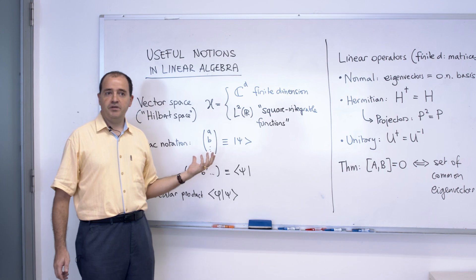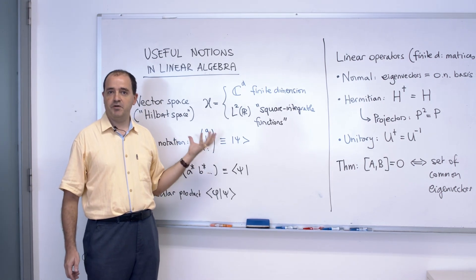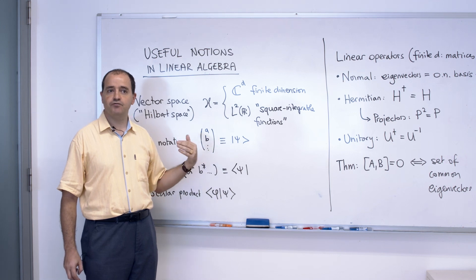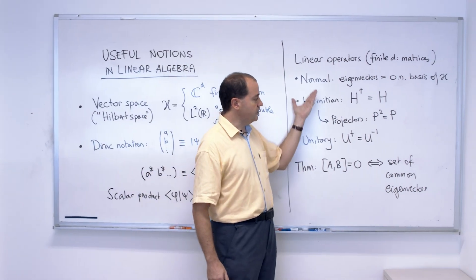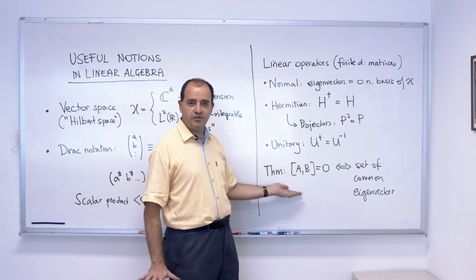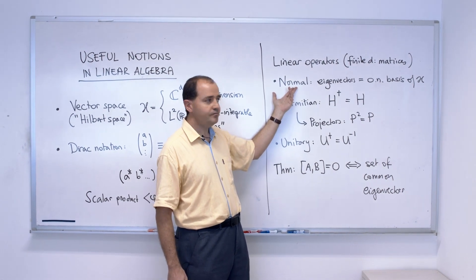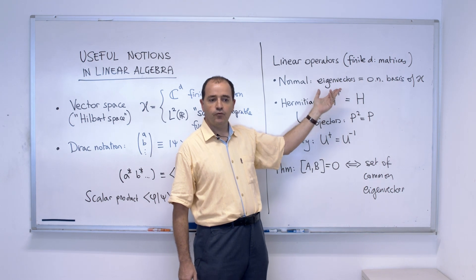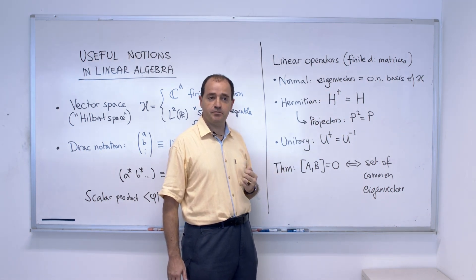Now besides vectors, we need operators. We need linear operators, which in the finite dimensional cases are matrices, objects that transform vectors into vectors, and these are the most used ones. Most of the operators that we are going to see are what are called normal operators. Normal operators are such that the eigenvectors form an orthonormal basis of the Hilbert space.